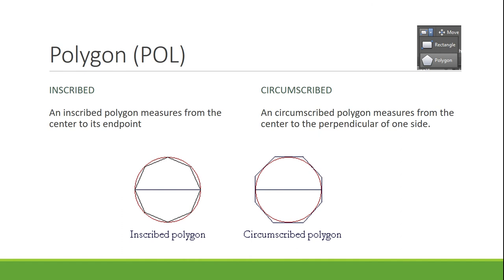When dealing with polygons, there are two important rules: inscribed and circumscribed. The difference is whether you want your polygon on the inside of a circle (inscribed) or on the outside of a circle (circumscribed). A simple way to remember: inscribed means inside, circumscribed means outside.